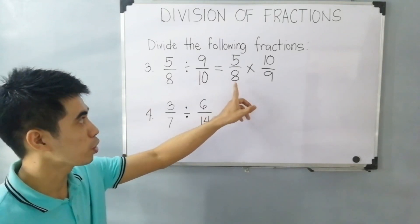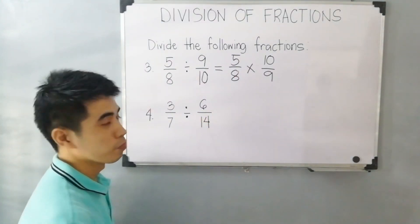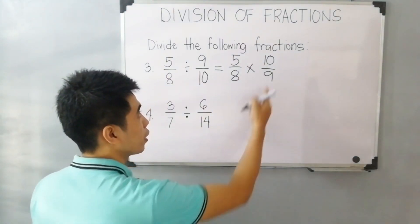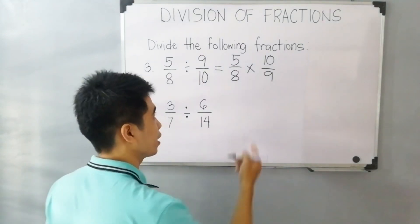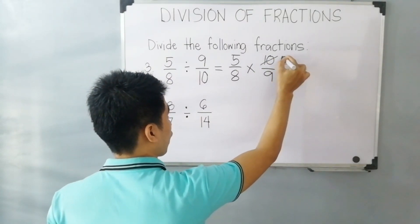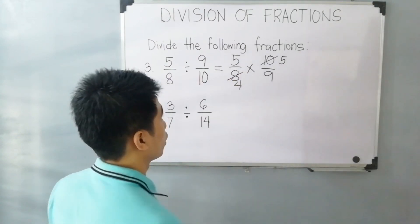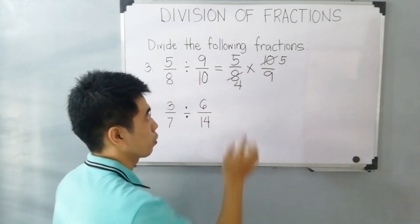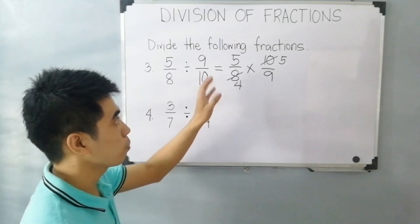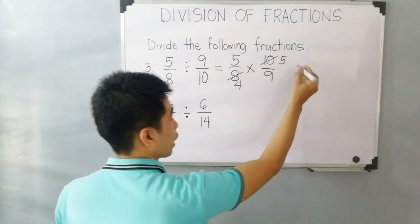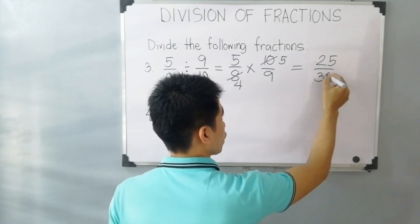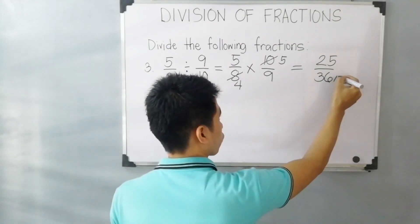Next, multiply 5 over 8 and 10 over 9. Analyze if we can simplify: 10 and 8 are divisible by 2, so 10 divided by 2 is 5 and 8 divided by 2 is 4. We cannot simplify the remaining numbers since 5 cannot simplify with 4 and 9. So multiply the numerators: 5 times 5 equals 25, and 4 times 9 equals 36. Therefore our final answer is 25 over 36.